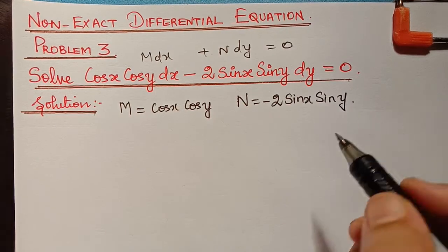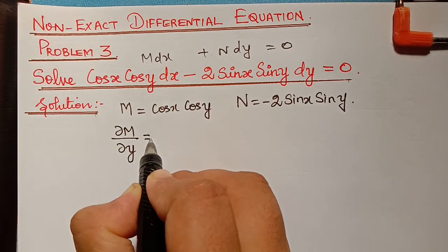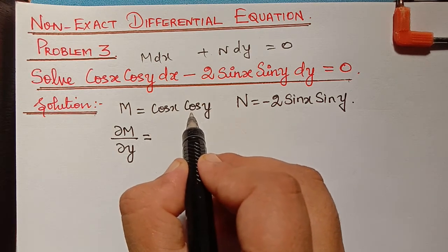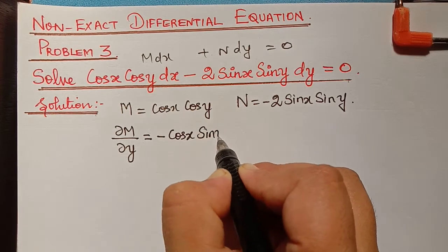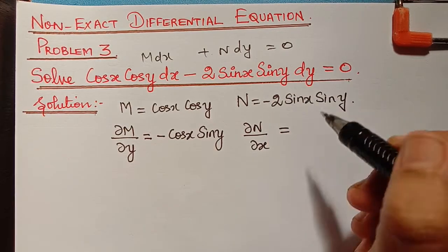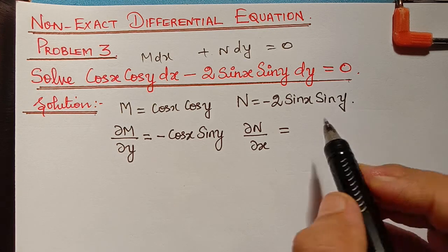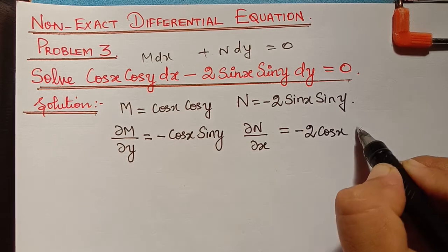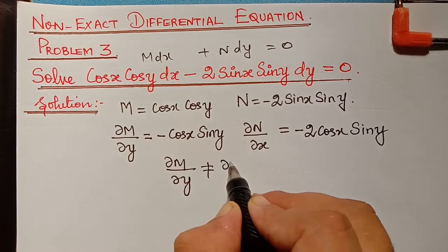First, we have to check the exactness of this equation. We find ∂M/∂y: differentiating cos x cos y with respect to y, cos x remains constant and the differentiation of cos y is minus sin y, so we get minus cos x sin y. Then ∂N/∂x: differentiating minus 2 sin x sin y with respect to x, sin y is constant and the differentiation of sin x is cos x, so we get minus 2 cos x sin y. We observe that ∂M/∂y is not equal to ∂N/∂x.